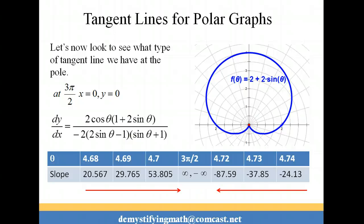What I'd like you to do is think about this: if we were using a cosine graph instead of a sine graph, it would have symmetry with respect to the polar axis. What would happen to the tangent line as you head into the pole on that graph? Go through that cosine graph and see what happens. Thank you for tuning in to Demystifying Math.